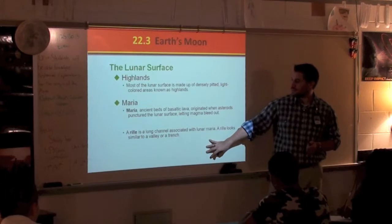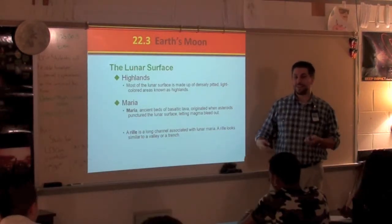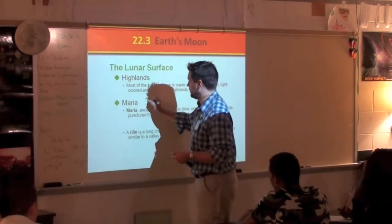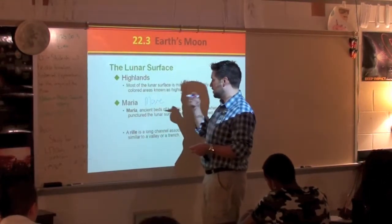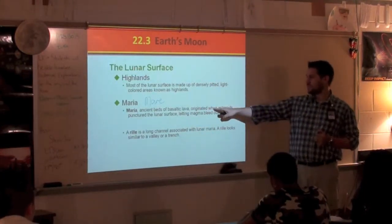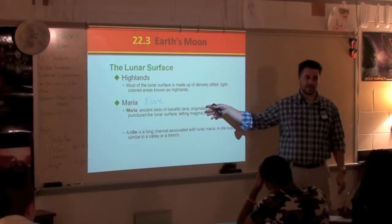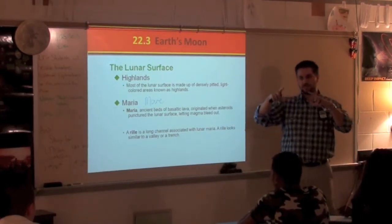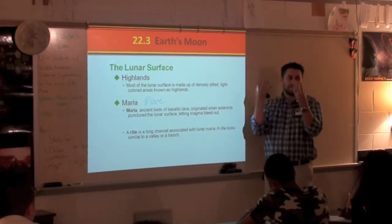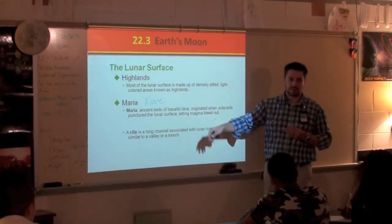Then there's Maria — plural of the word 'mare,' M-A-R-E. The mare, or maria, are the ancient beds of basaltic lava that originated from asteroid punctures. That's where you have those giant features like the Sea of Tranquility — it's where lava bubbled up and out of the moon, filled in the crater, and formed a smooth plain.